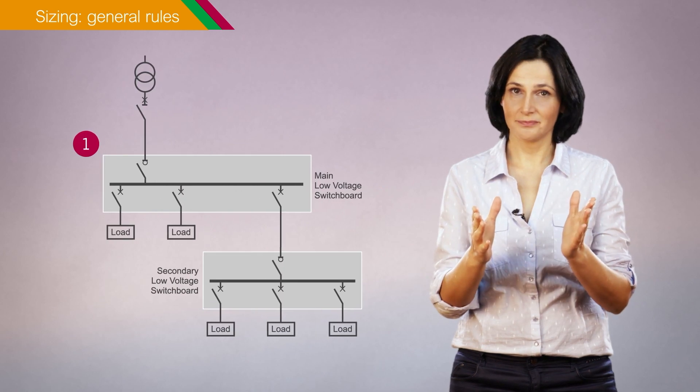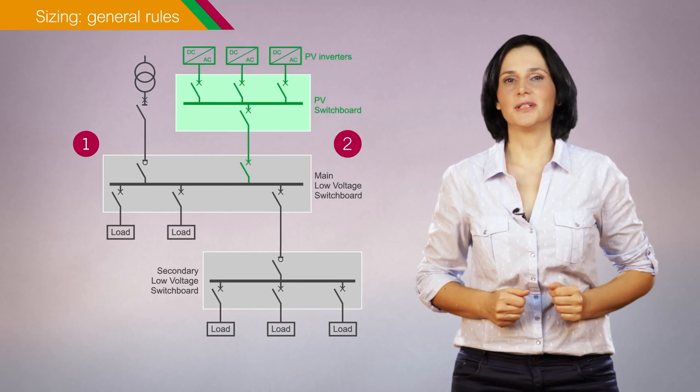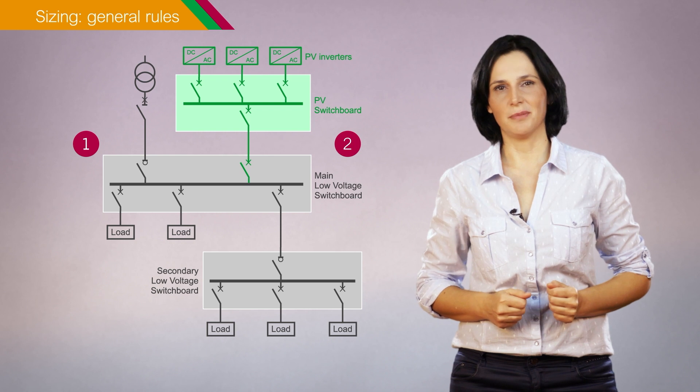Let's start with a short reminder. Electrical installations with photovoltaic production are characterized by at least two operating modes: supplied by the grid, or supplied by the grid and the photovoltaic system in parallel.